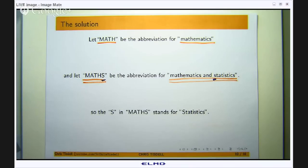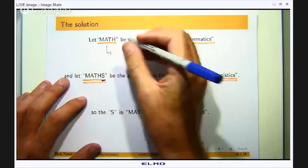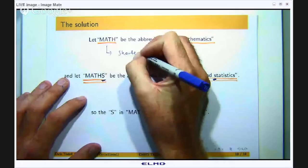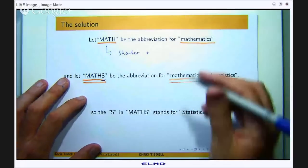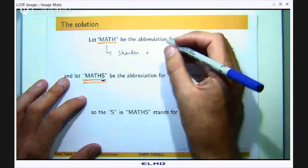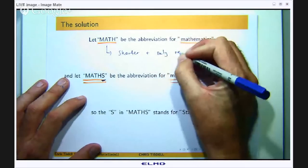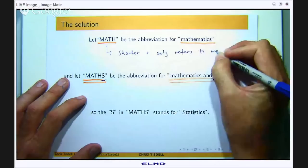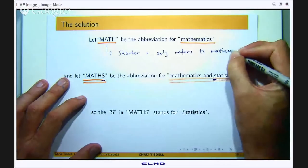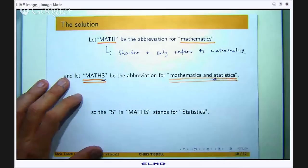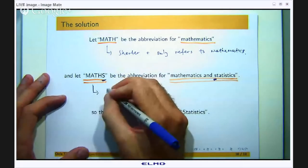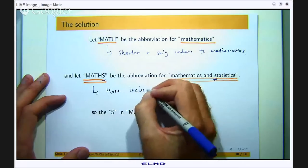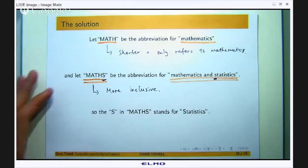So if you wanted to say, what's the difference? Well, I guess the math abbreviation is shorter and more precise, or only refers to mathematics. And the maths abbreviation is more inclusive because it includes statistics as well.